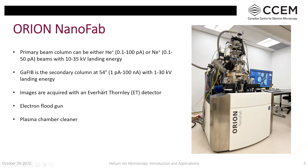Images are acquired with a secondary electron detector, the Everhart-Thornley detector, mounted on the chamber. The instrument also has a plasma chamber cleaning system, which is important for cleaning samples before work to avoid hydrocarbon deposition and to maintain a clean chamber.